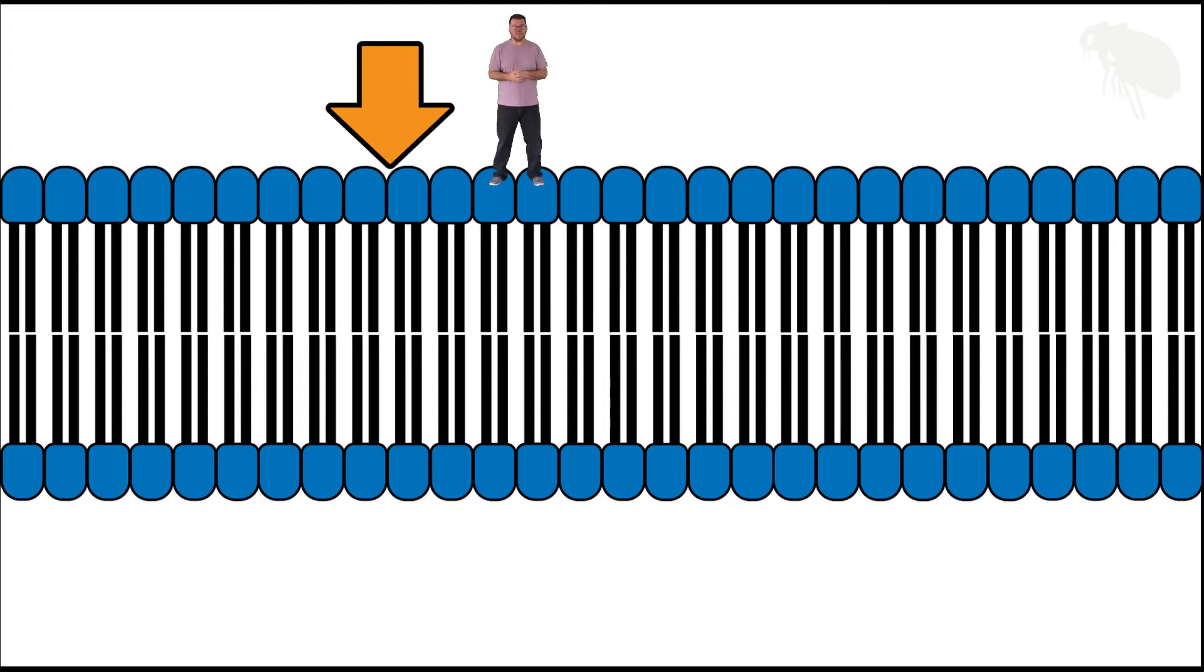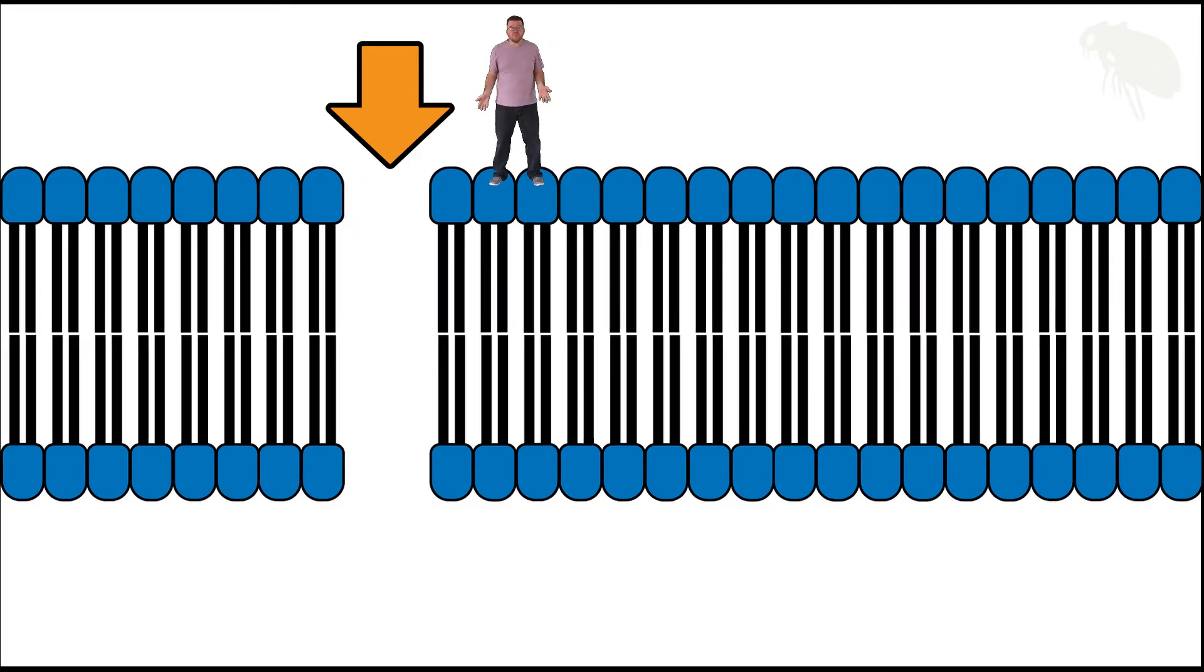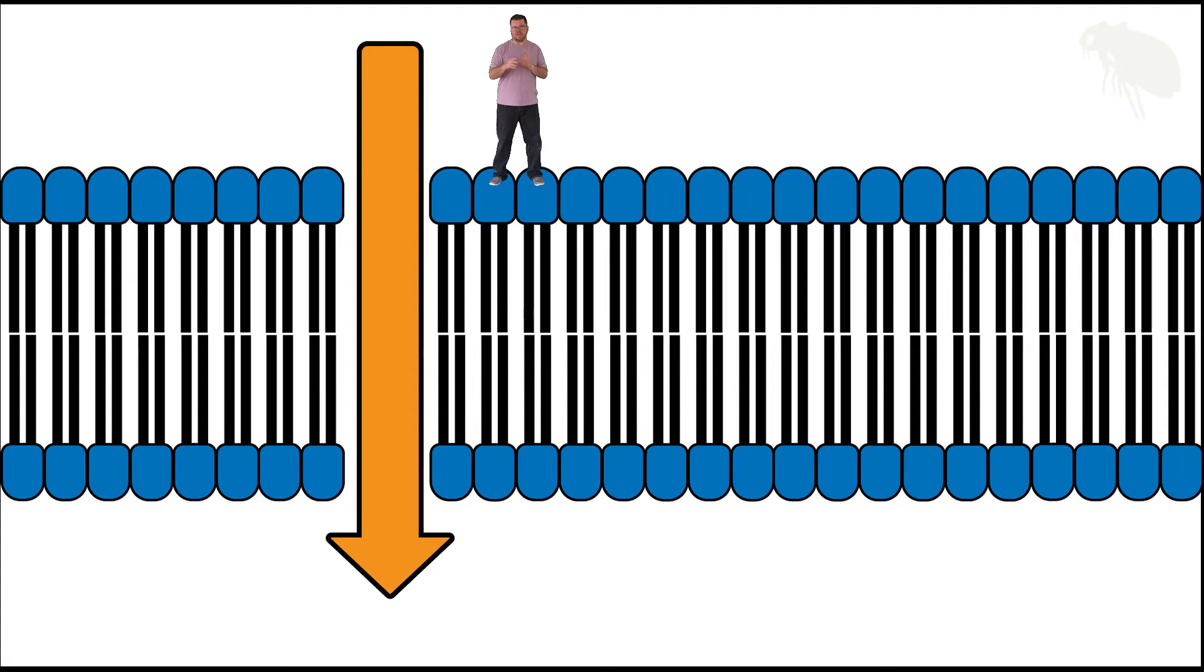What those substances effectively need are holes. A hole to pass through. Now I'll talk in another video about what that actual hole is but if there was a hole that allowed a substance to go through the membrane without going through that hydrophobic interior it could freely enter or leave the cell.